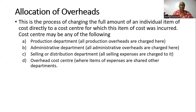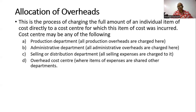So let's move on to the third step — allocation of overheads. Allocation of overheads is the process of charging the full amount of an individual item directly to a cost center for which this item was incurred. We are saying that any indirect cost that is related to a specific department, that cost will be charged directly to the department it pertains to. For example, production department will take care of all the production overheads, administrative overheads will be charged to the administrative department, and selling expenses will also be charged to the selling and distribution department.